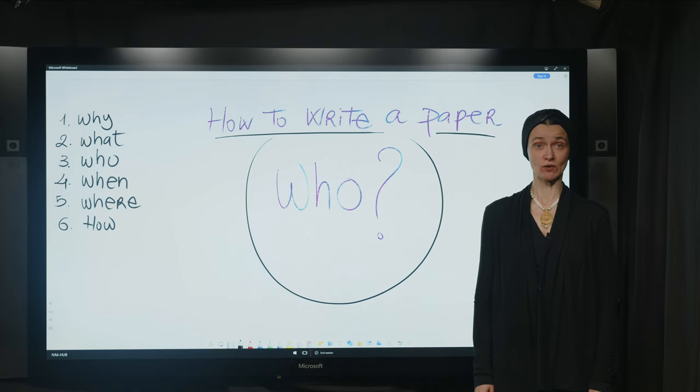The third one is who is our audience? The fourth one is which are our roots? Genealogically speaking, our references, when are we locating our argument? The fifth one is about the architecture of our paper and the sixth one is how, the tone of our writing style.